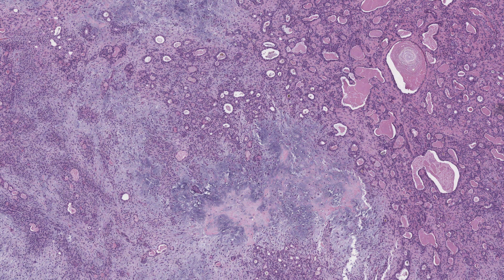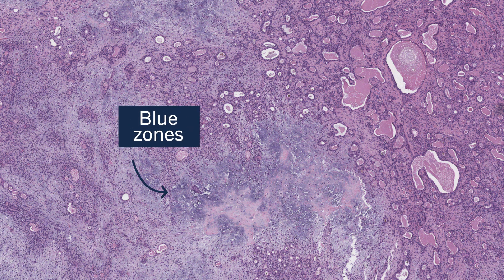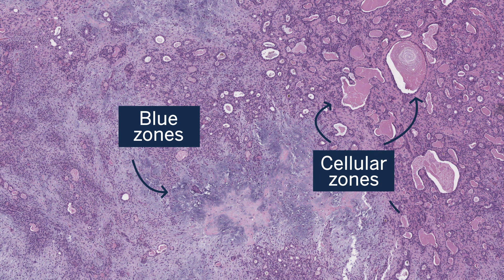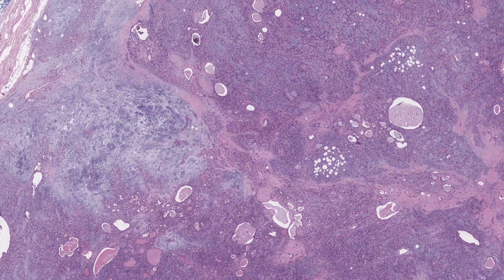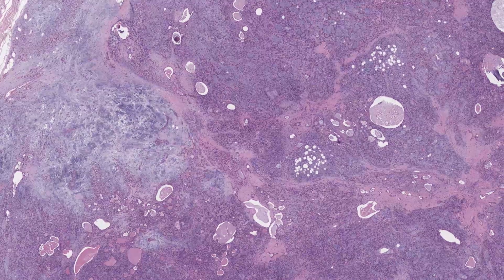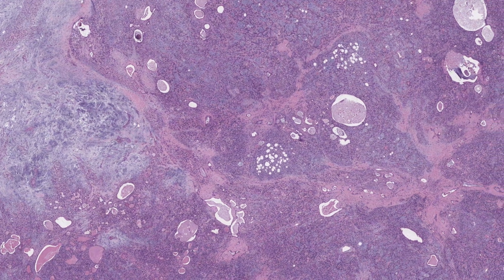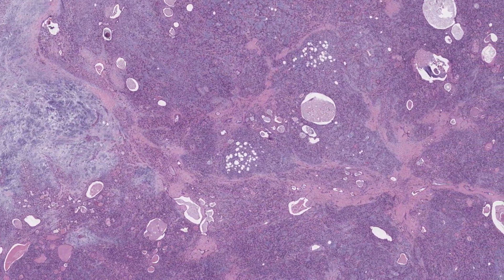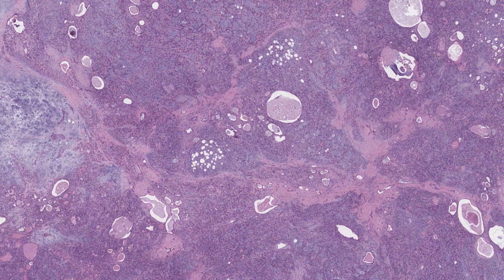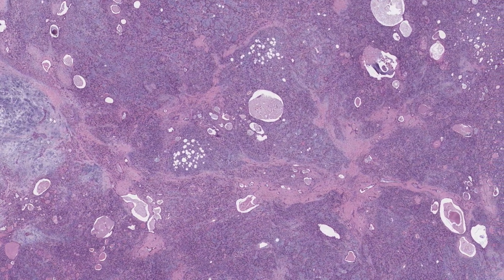These are very variable tumors — from field to field, the histology changes. You can appreciate big zones of blue alternating with more cellular zones filled with ductal structures and pink secretions. From field to field it's very heterogeneous, and that's where the word pleomorphic comes from. You usually think of pleomorphism as atypical cytology — pleomorphic cells seen in cancer.